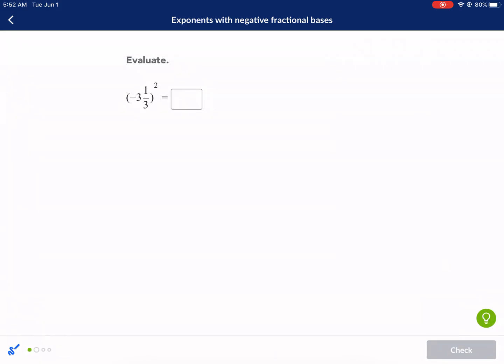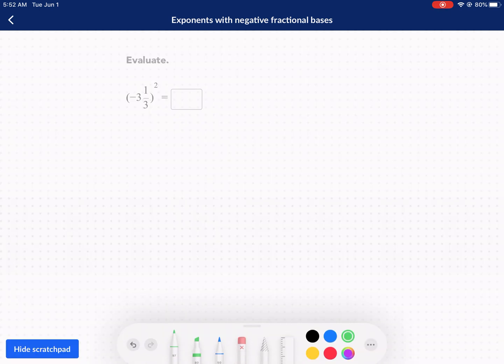Alright, next question. Now we have 3 and 1 third squared. So we have to do the same thing here. We're going to put the parentheses and multiply the same thing by itself. But the difference is we have a mixed number here. So we're definitely going to want to convert this into an improper fraction. Let's go ahead and show how to do that.